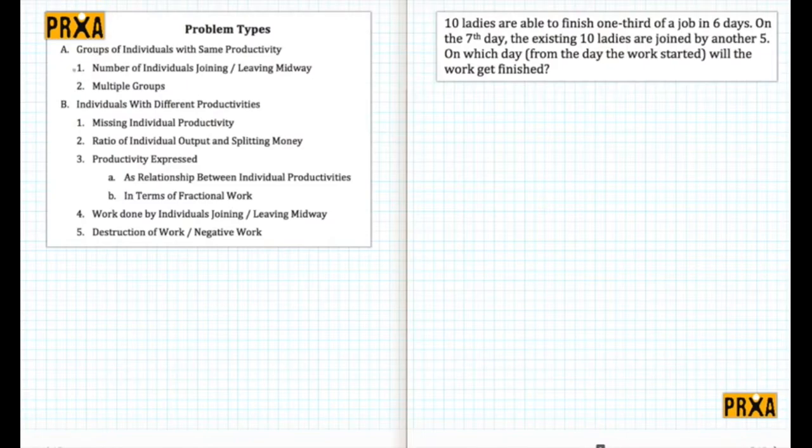Let's look at this problem. There are ten ladies, and the assumption is that all of them have equal capabilities or equal productivities. Ten ladies are able to finish one-third of a job in six days. On the seventh day, the existing ten ladies are joined by another five ladies. The question is: on which day from the day the work started will the entire work get finished?